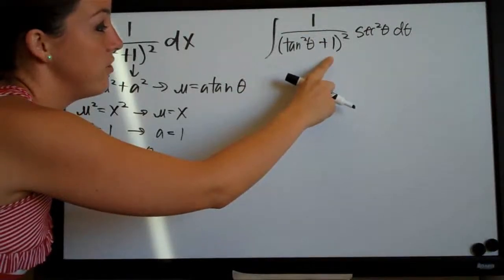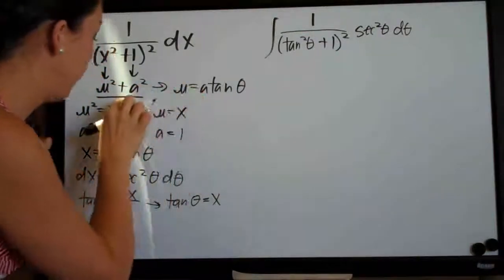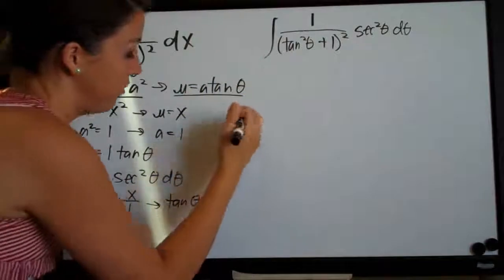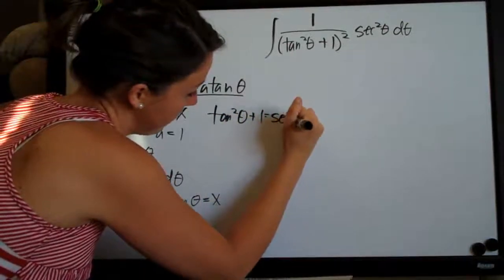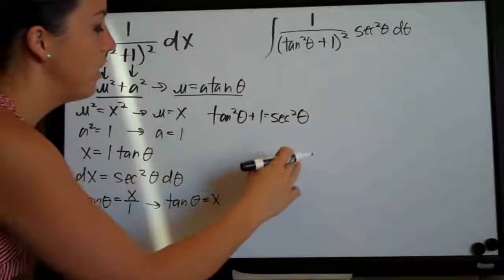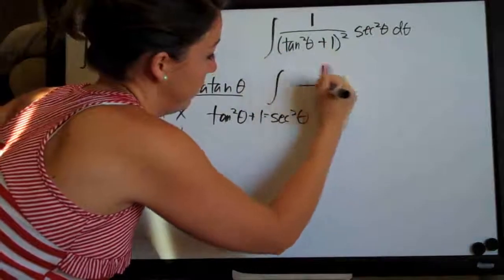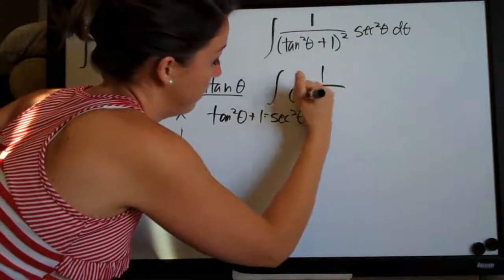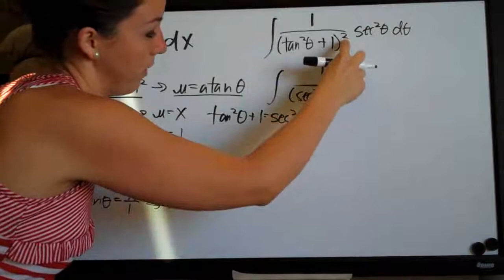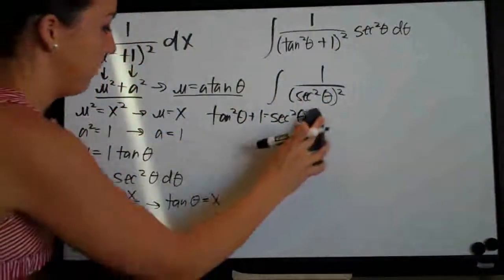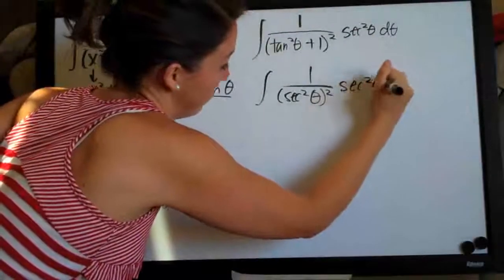Now we simplify. The tangent squared theta plus 1 that appears in the problem, combined with this substitution, tells us to use the identity tangent squared theta plus 1 equals secant squared theta. Since we have tangent squared theta plus 1 in our problem, we can change that to secant squared theta, keeping the squared power, and leave secant squared theta d theta in the numerator. I'll go ahead and erase this so it doesn't get in our way.